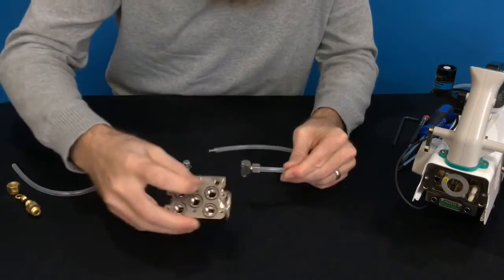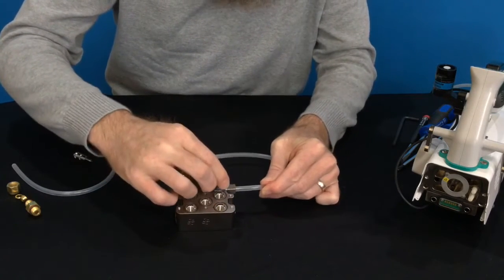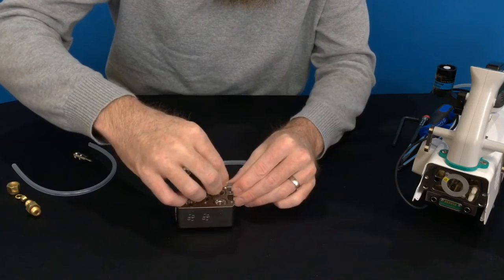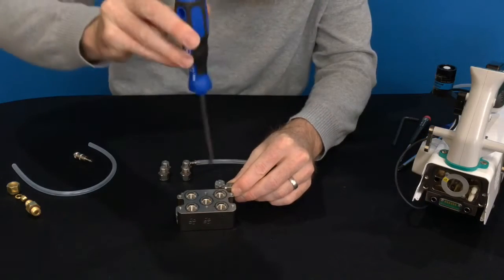And this fitting goes on the A port of the manifold, and this is capturing the return air from the erga exhaust, and this is where we need a flathead screwdriver.